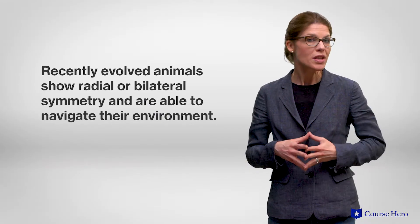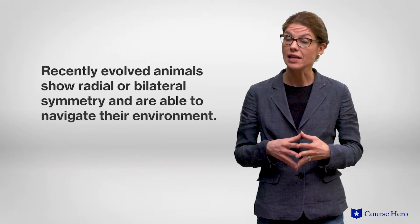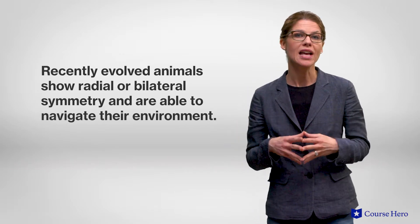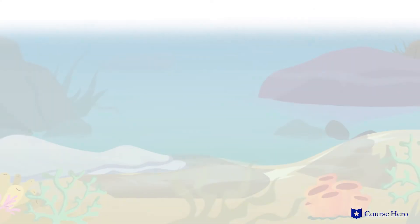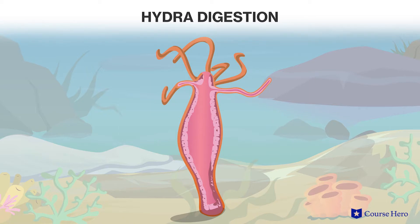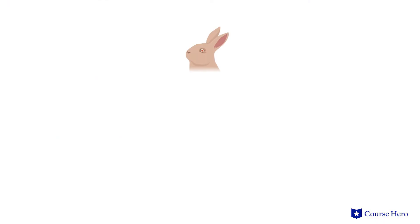However, more recently evolved animals show radial or bilateral symmetry and are able to navigate their environment. Some have an incomplete gut, where food and wastes enter and exit through a single opening, and others have a full one-way digestive system.